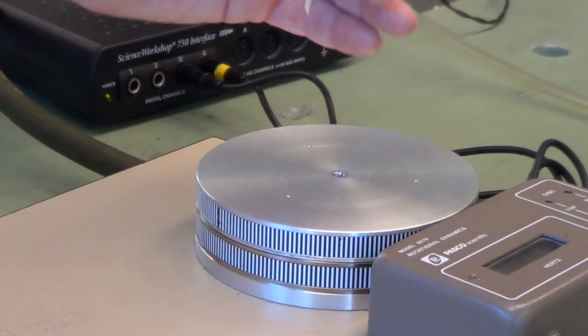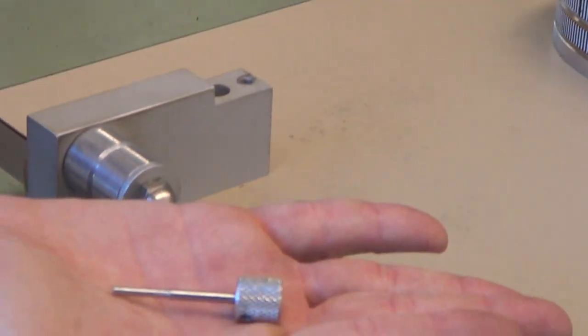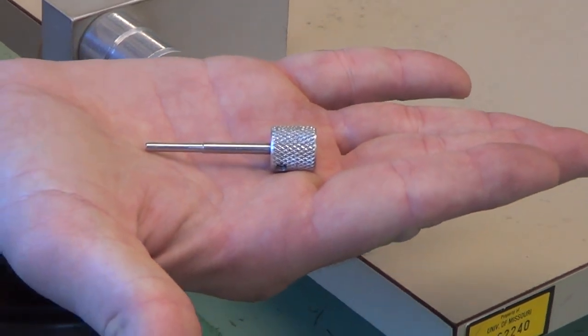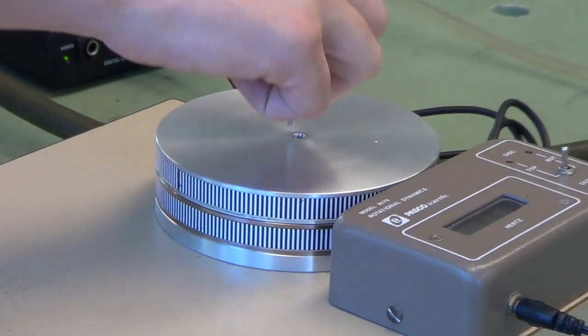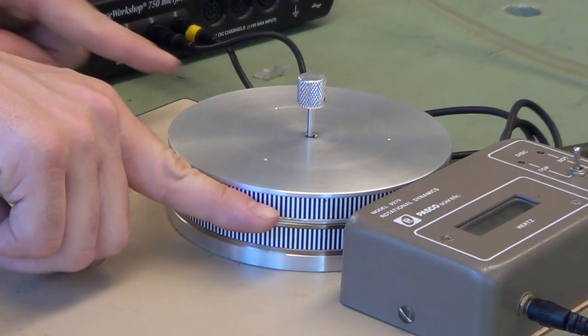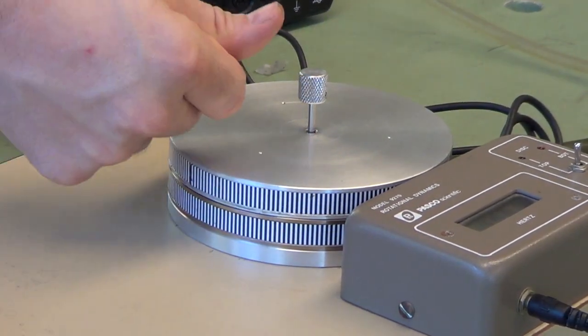And for the collisions lab, we have a pin that fits into the spindle. This allows us to lock the two discs together. When the pin is in, it forces the air to come between the discs, rather than come out through the top.